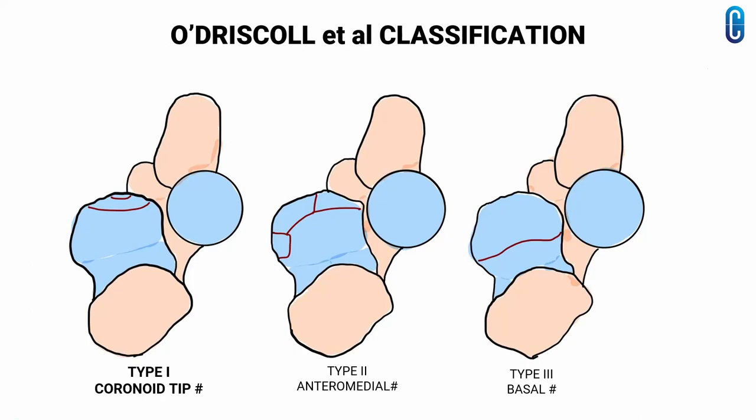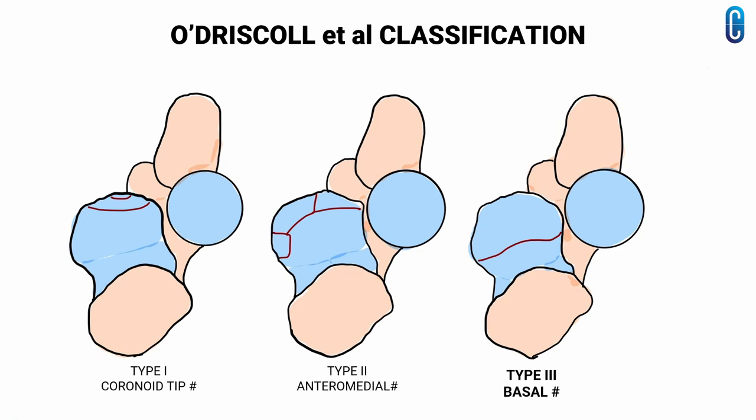More recently, the classification system developed by O'Driscoll et al has been shown to be more reliable in predicting associated injuries and in guiding treatment decisions. This classification takes into consideration the size, anatomical location, and mechanism of injury. The coronoid is divided anatomically and classified as the coronoid tip fracture, anteromedial fracture, and basal part fracture.